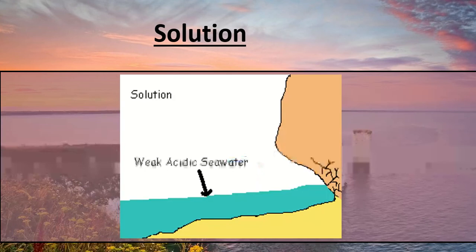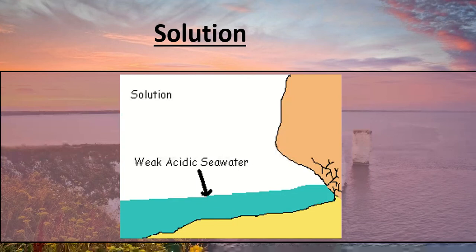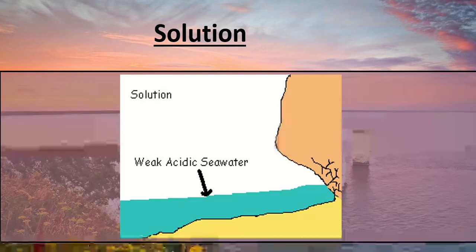The fourth and final process of erosion at a coastline is solution. This is slightly different to all the others in that the seawater is slightly acidic — a weak acidity — and therefore it dissolves and wears away different chemicals in the rock, often calcium. So as it wears away, those rocks get thinner and smaller. That's the fourth one: solution.